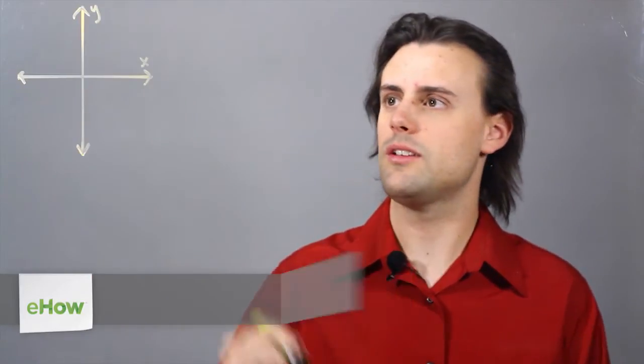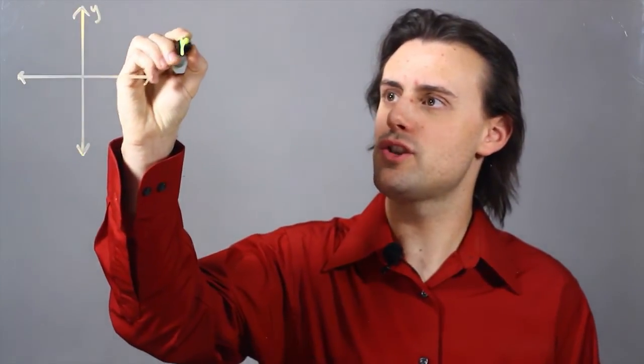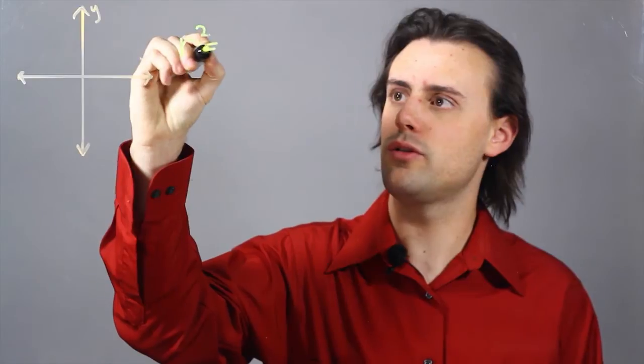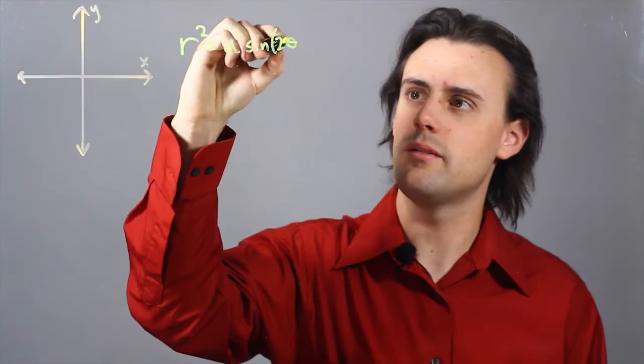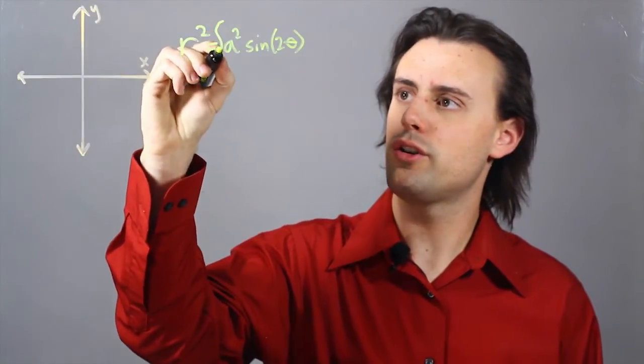So Lemniscate is generally described by the analytic equation r squared is equal to a squared times sine of 2 theta, or alternatively, a squared times cosine of 2 theta.